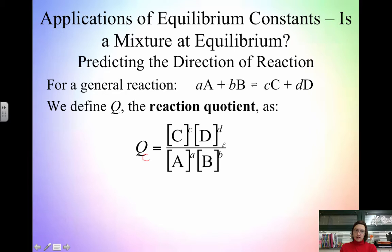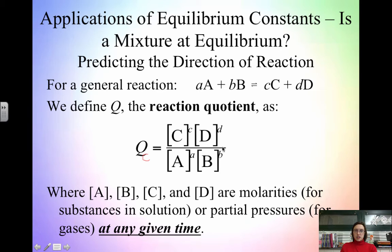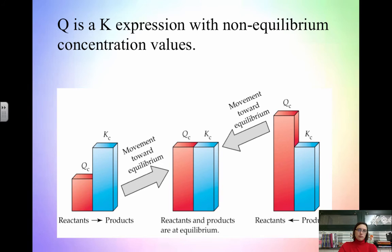Each concentration or pressure in Q is at any given time in the reaction — under current conditions. The whole point is to figure out: is our reaction at equilibrium? If not, what has to happen to reach equilibrium? Q is simply an equilibrium constant expression but with non-equilibrium values. Nature wants Q to equal K. This is especially useful for slow reactions.